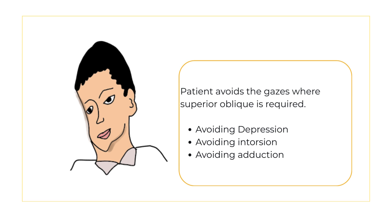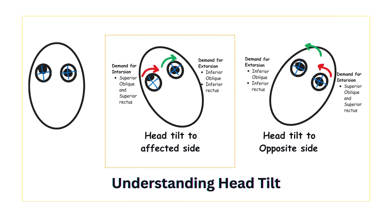This means avoiding depression, avoiding adduction, and avoiding intorsion. The compensatory head posture places the eye in a position where the superior oblique is least active, thereby reducing diplopia. When the head is tilted towards the affected side, the vestibulo-ocular reflex demands intorsion of that eye. The two intorsors are the superior oblique and the superior rectus. In fourth nerve palsy, the superior oblique is weak, so the superior rectus overacts to compensate. Since the superior rectus also elevates the eye, this leads to worsening of hypertropia.